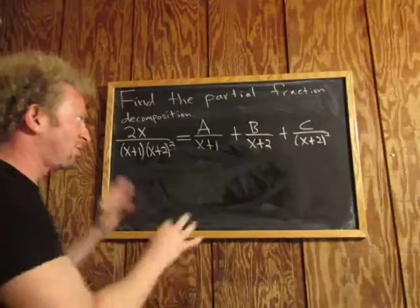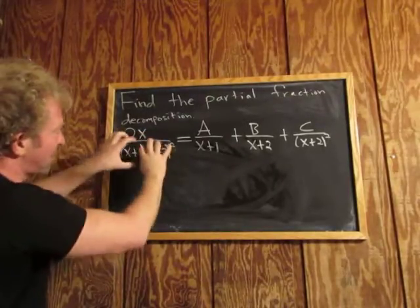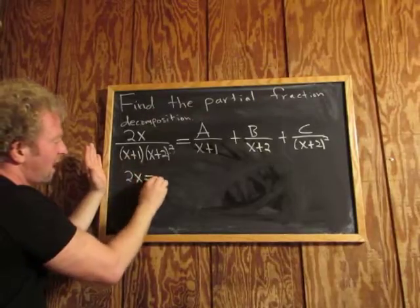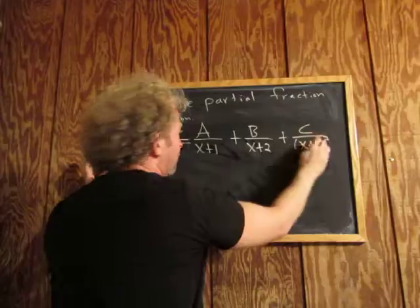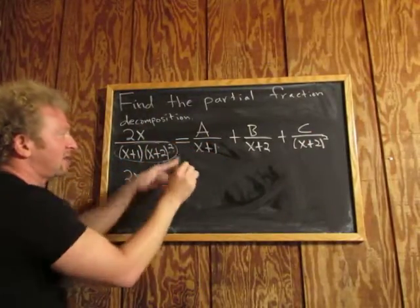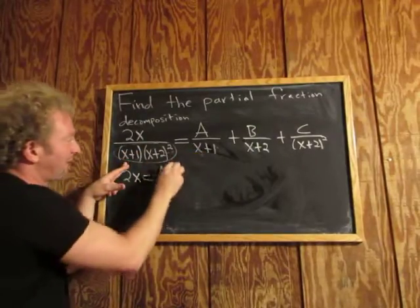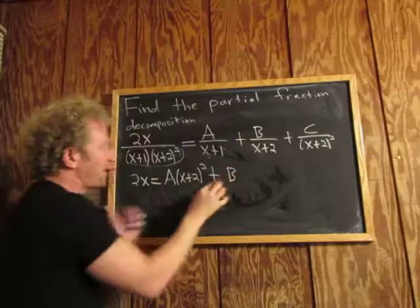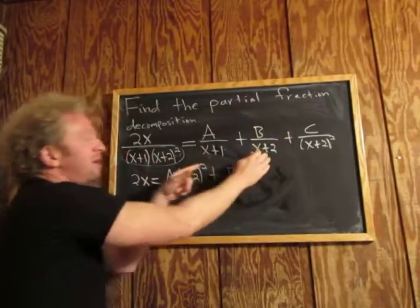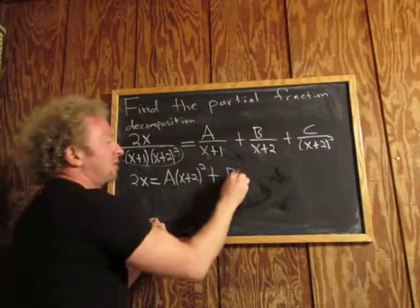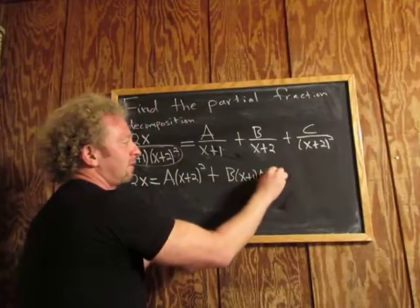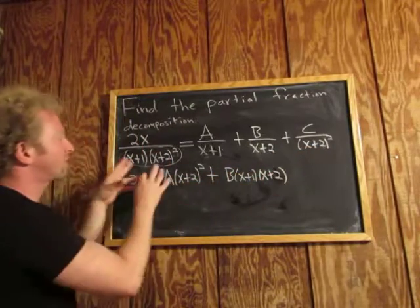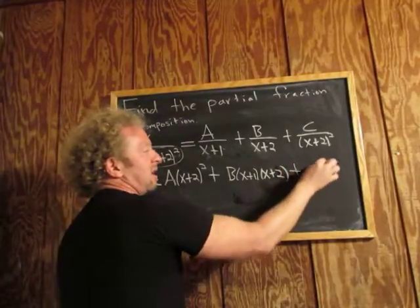Now what we're going to do — you have to use your imagination here because the board is kind of small — is multiply everything by the common denominator. So if you take this and multiply by that piece, we're left with 2x on the left. When A over (x+1) is multiplied through, the (x+1) cancels, so we're left with A times (x+2) squared. Then B times (x+1)(x+2) — one copy of (x+2) cancels. And finally C times (x+1), since both copies of (x+2) cancel.